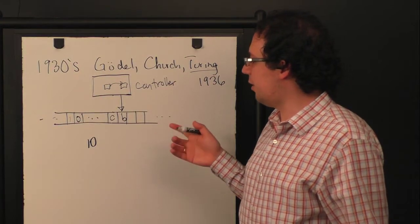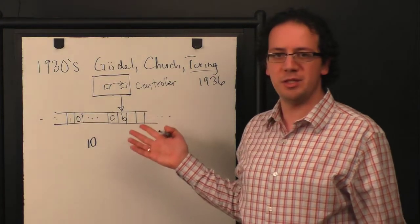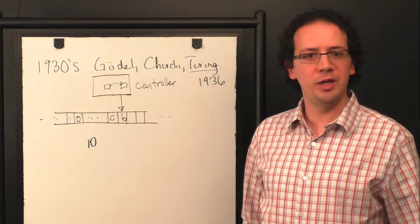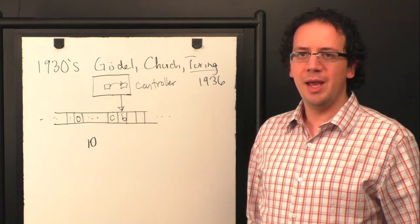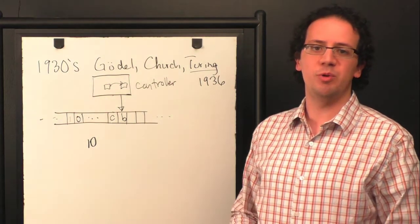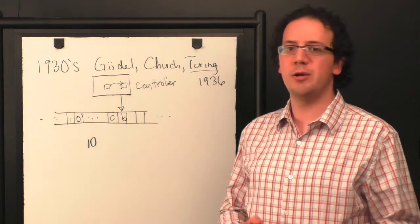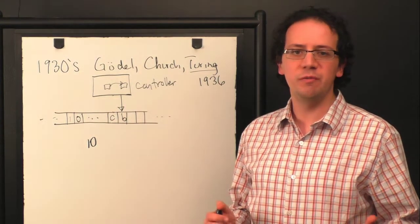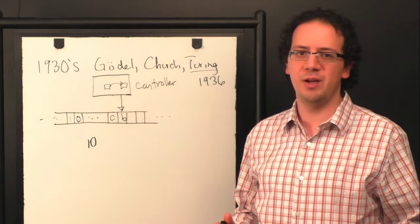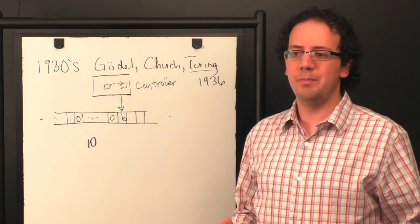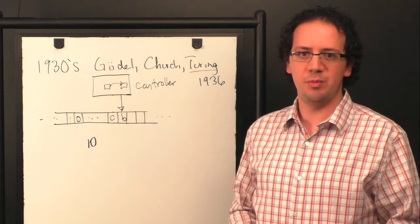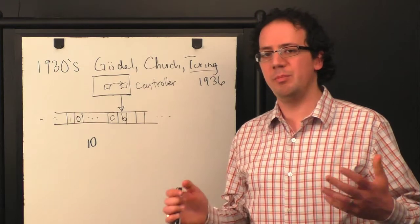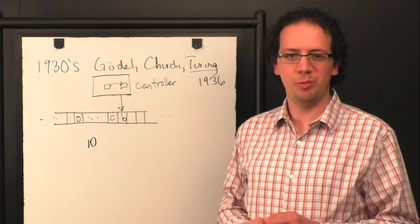And the argument that Turing made is that this essentially captures everything that you would naturally call computable by finite means. And although there have been proposals for models of computers that potentially go beyond this, they usually involve some sort of infinity, taking infinitely many steps in a finite amount of time, things like that. They're not generally considered practical. There are some proposals based on black holes and quantum mechanics and things like that, but again, not particularly practical.